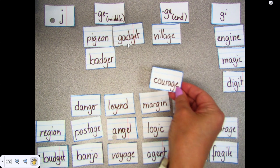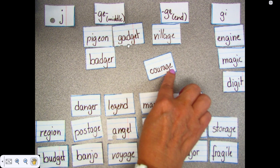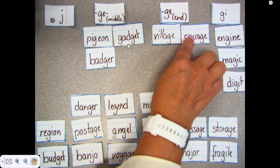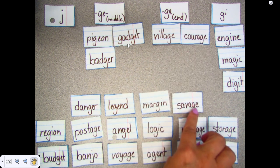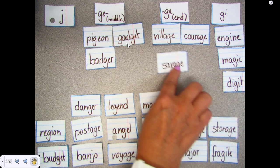Courage. The G-E is at the end, so it goes over here. Savage. Oh, another one that has the G-E at the end.